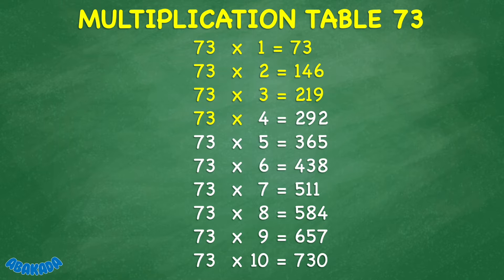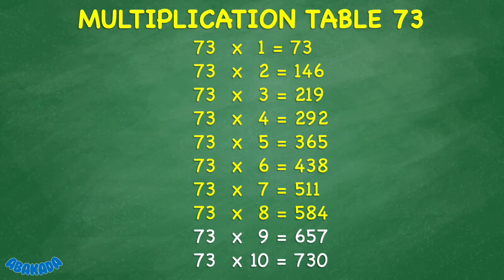73 times 4 equals 292. 73 times 5 equals 365. 73 times 6 equals 438. 73 times 7 equals 511. 73 times 8 equals 584. 73 times 9 equals 657. 73 times 10 equals 730.